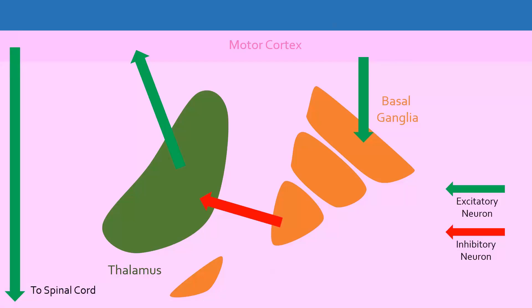When we want to move, the motor cortex sends a signal to the basal ganglia. The basal ganglia regulate movement by either activating or inactivating the inhibitory neurons between the basal ganglia and the thalamus. If these inhibitory neurons are activated, the neurons connecting the thalamus to the motor cortex are not allowed to send signals. If those neurons do not fire, the motor cortex receives no feedback and no movement occurs.